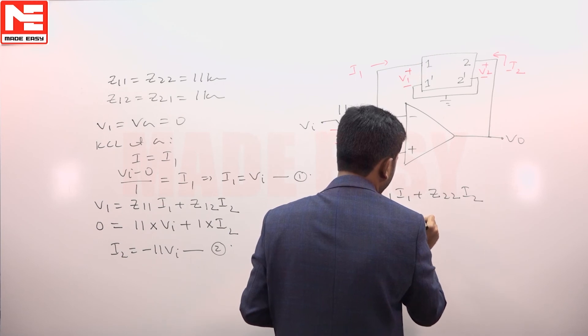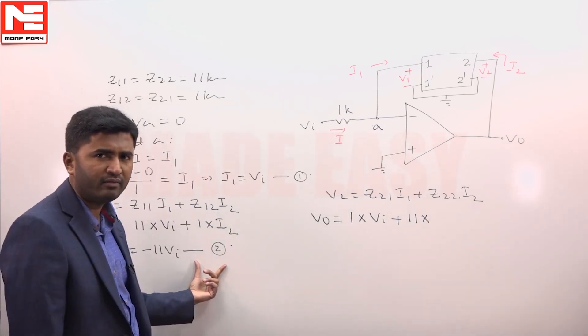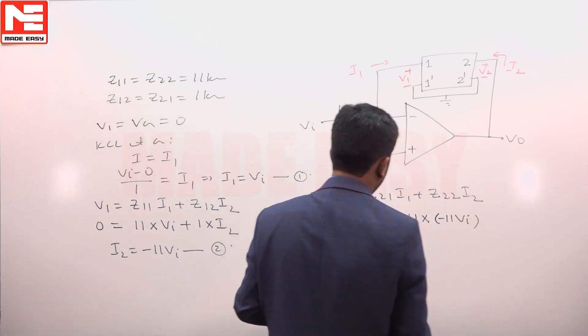And i2 from equation number 2 is minus 11 V i. Let us substitute here. If you rewrite it, it will be minus 120 V i.